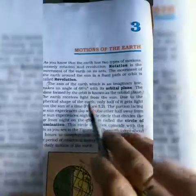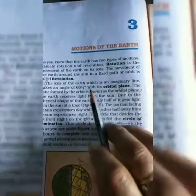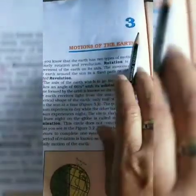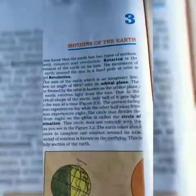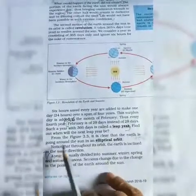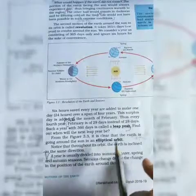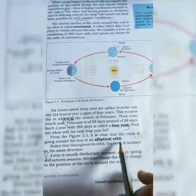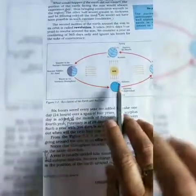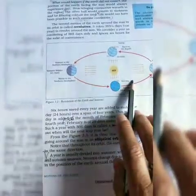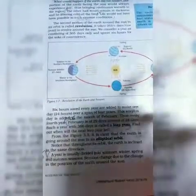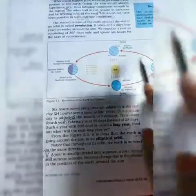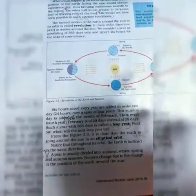Hello children, welcome to online class. Today we will continue the third lesson of Class 6 Geography — Motions of the Earth. From figure 3.3, it is clear that the Earth is going around the sun in an elliptical orbit. In this figure, we can see that the Earth is going around the sun in an elliptical orbit.